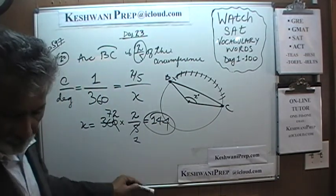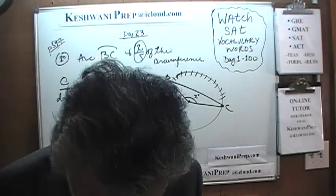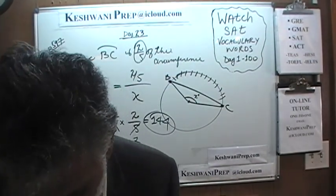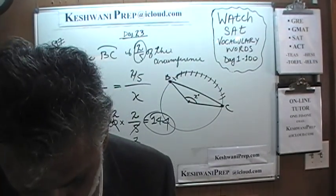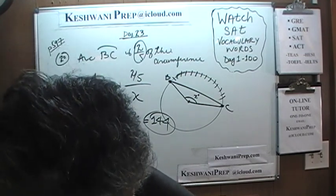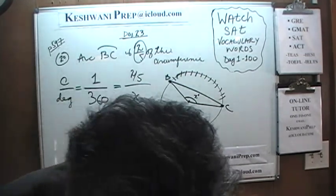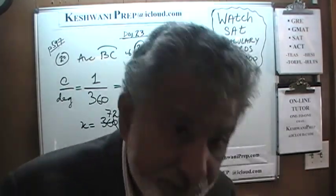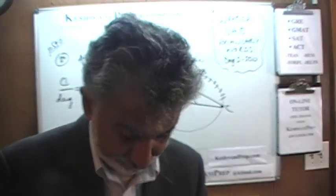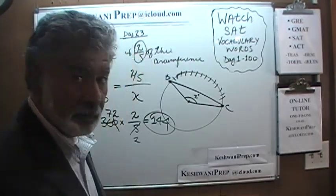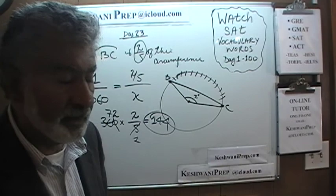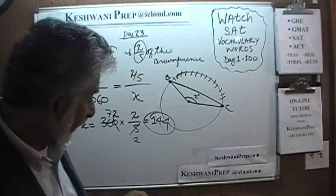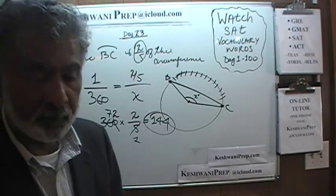That was the end of the grid-in section, and I believe that is also the end of the section. Tomorrow when we meet we will start the new section — Section number 4 — which allows us to use the calculator. If you wish to get hold of me, you can send me an email at KeshwaniPrep at iCloud.com. Bye now.